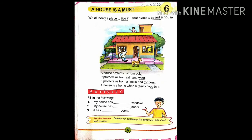We all need — need means जरूरत — a place — place means जगह — to live in. Live in means अंदर रहना, उसके अंदर रहना. We all need a place to live in. हम सबको बेटा कोई ऐसी जगह चाहिए होती है जहाँ पर हम रह सकें. That place is called — called means कहना — a house. That place is called a house. तो फिर हम उस जगह को house कहते हैं.